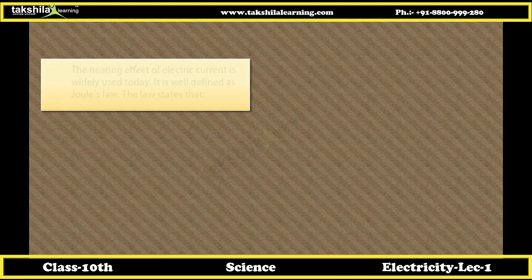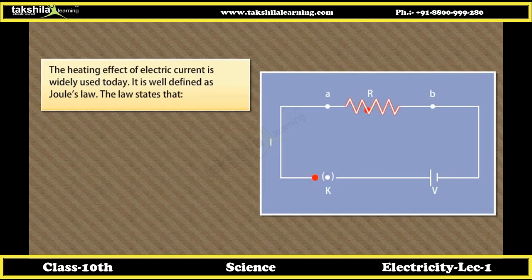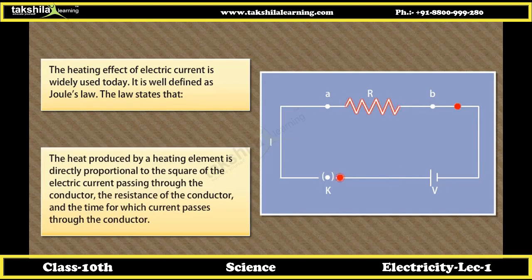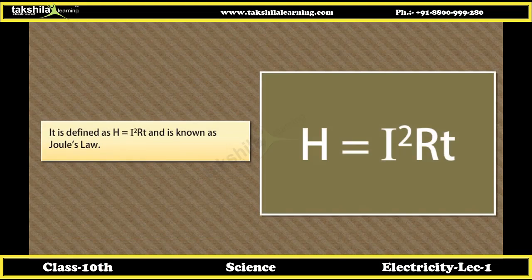Heating effect of electric current. The heating effect of electric current is widely used today. This effect occurs when electric current is passed through a conductor, generating heat due to the resistance it offers to the current flow. The work done in overcoming this resistance produces heat. The heat produced is directly proportional to the square of the electric current, the resistance of the conductor, and the time for which the current passes. This is expressed as H = I²RT and is known as Joule's Law.